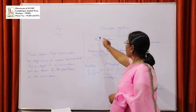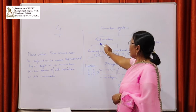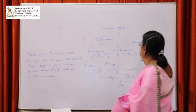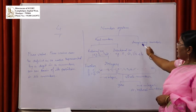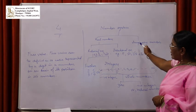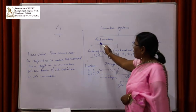Number systems include real numbers and imaginary numbers. Imaginary numbers relate to real numbers in specific ways.